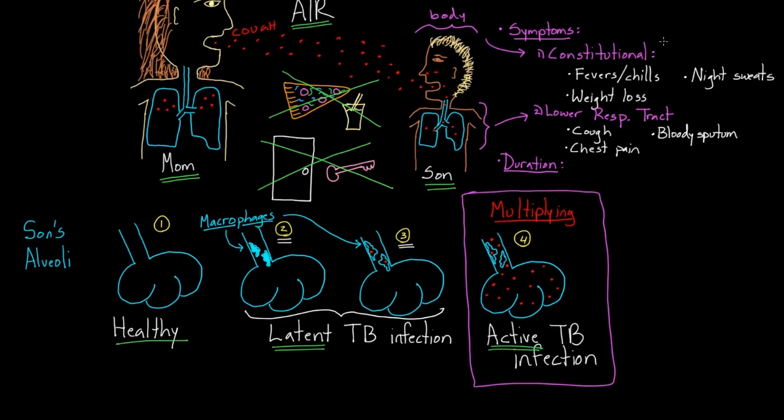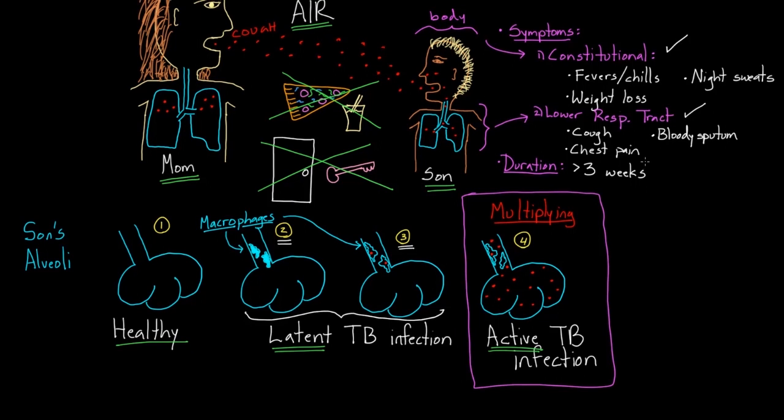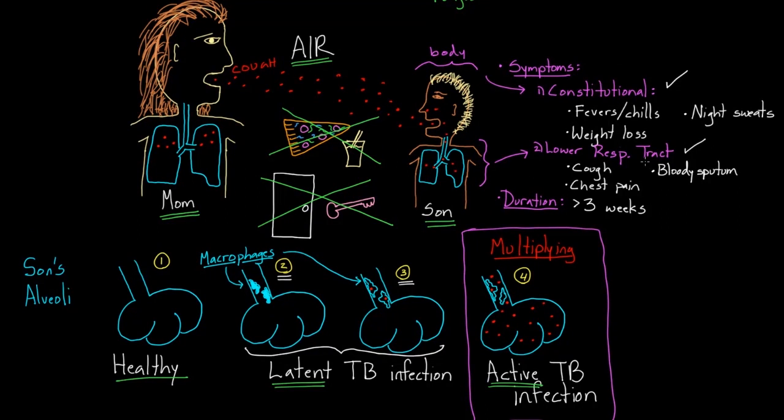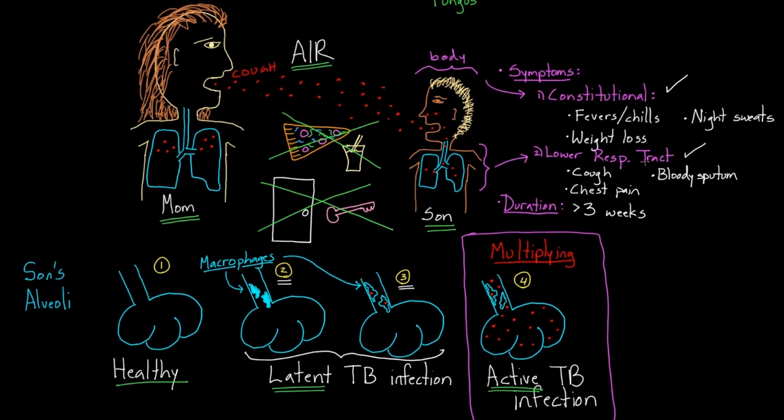So these are some examples of lower respiratory tract symptoms. And so I always think in my head, okay, are they having constitutional symptoms? If so, I put a check there. Are they having some lower respiratory tract symptoms? If so, I put a check there. And then how long is it going for? And usually with things like active TB infection, I'm thinking it's got to be usually more than three weeks. So more than three weeks. And this is, again, focusing on TB of the lungs or the pleura, which is the space around the lungs. Generally, the symptoms have gone on for a little while. So these then become very helpful clues to figuring out if someone actually has active TB infection.